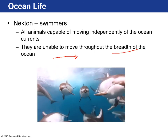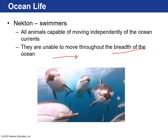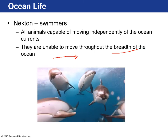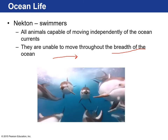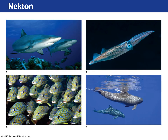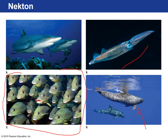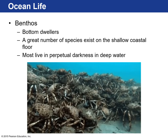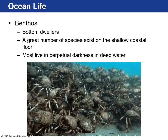Examples of nektonic marine organisms include adult squid, different species of dolphin, coral reef fish, and sharks.